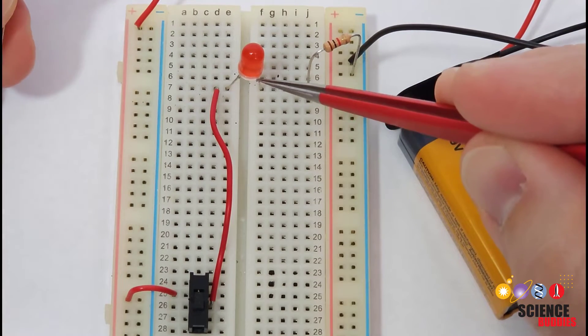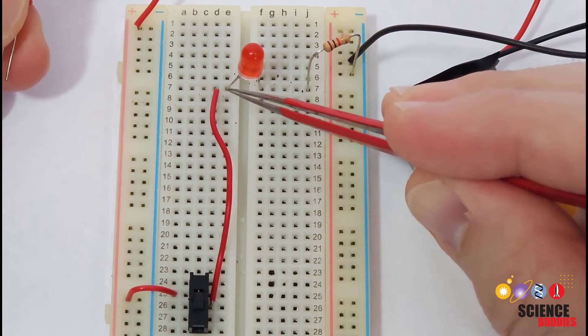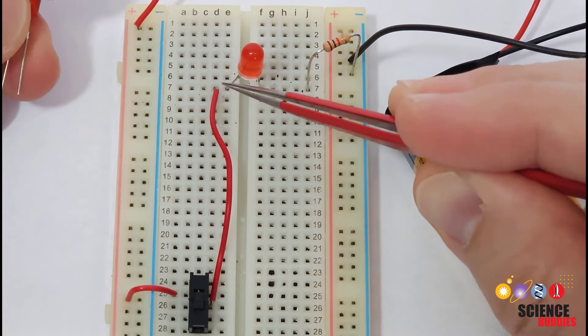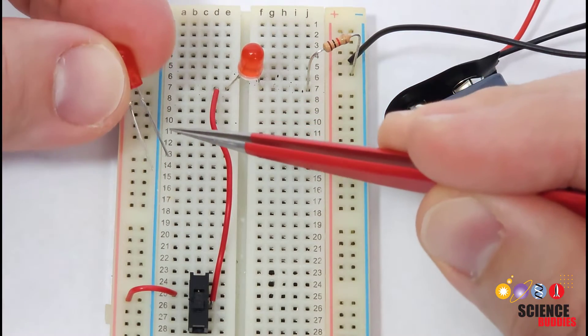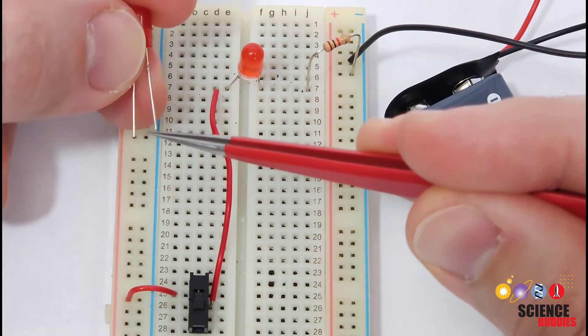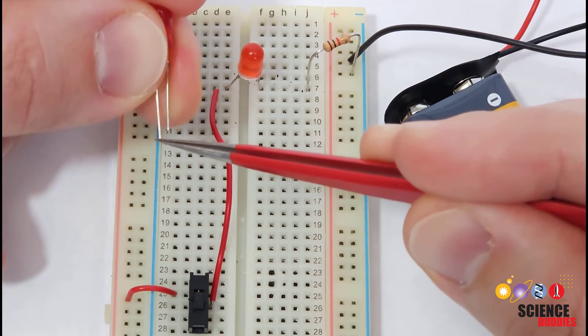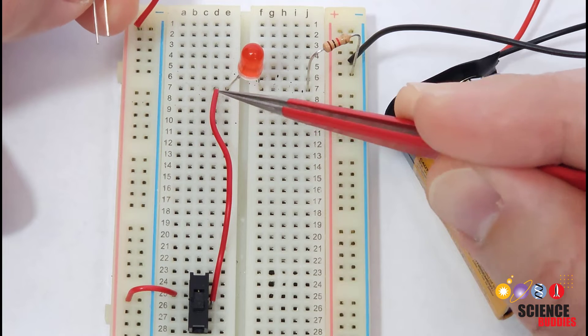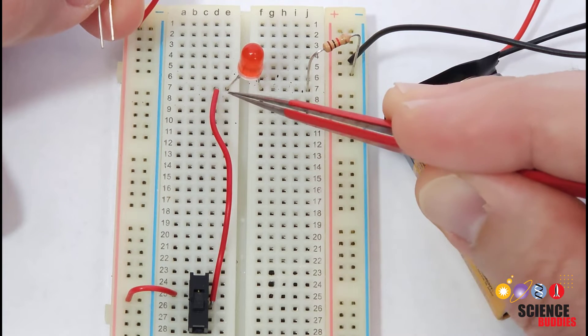The LED itself straddles the gap in the middle of the breadboard with one leg connected to the same row as this jumper wire. Note that LEDs are polar, meaning they have a positive side and a negative side. The positive side is the side with the slightly longer leg. So that's the side I need to have connected to the switch in this circuit.